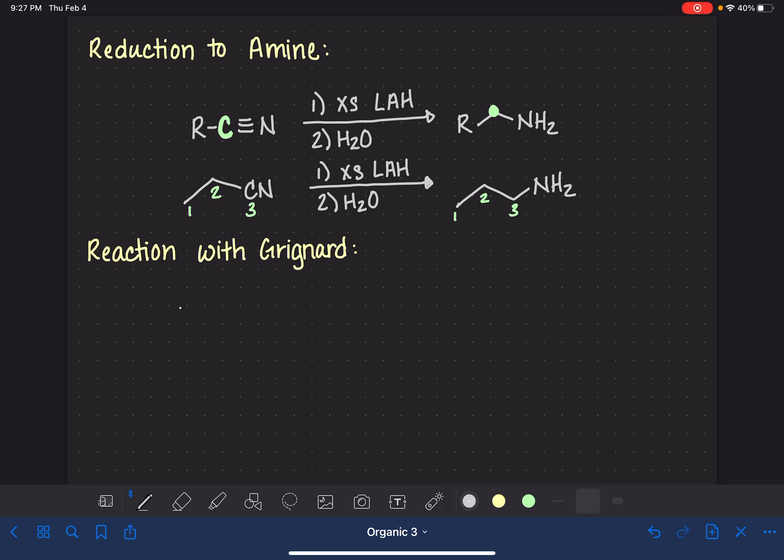The last reaction that we're going to look at is a reaction with Grignards. Nitriles react really unusually with Grignards. So this is going to be a two-step process starting with our Grignard reagent, just regular RMgBr followed by water. And the product of this reaction is a ketone.